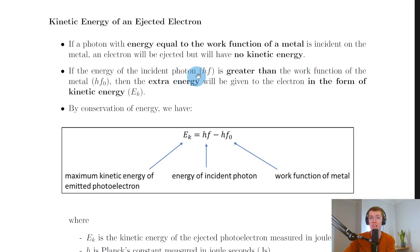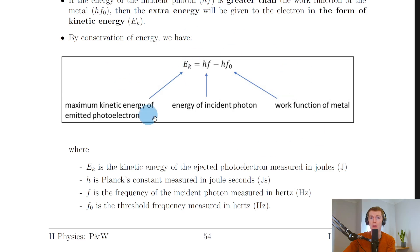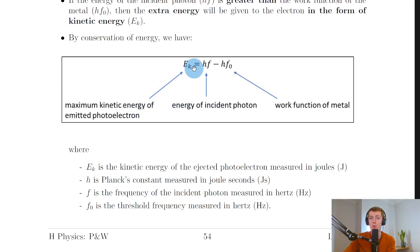If the energy of the incident photon hf is greater than the work function of the metal hf₀, then the extra energy will be given to the electron in the form of kinetic energy EK. By conservation of energy — which you get on the relationship sheet in the exam — EK is equal to hf minus hf₀. So the maximum kinetic energy of an emitted photoelectron EK equals the energy of the incident photon hf minus the work function hf₀.